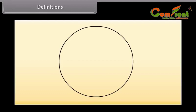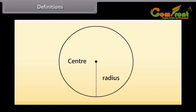Definition. Look at this circle. Now look at this dot in the circle — this is a fixed point and is called the center of a circle. We can make a radius with this point. Radius is the line from the center of a circle to a point on the circle. In this figure, OP is the radius.